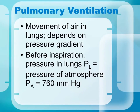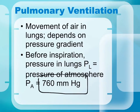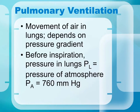Pulmonary ventilation is the movement of air in and out of the lungs, and what causes this movement is determined by pressure differences. The atmospheric pressure stays pretty much constant at 760 millimeters of mercury. The only pressure we can control is the pressure within the lungs. When lung pressure is lower than atmospheric pressure, air flows in; when it is higher than 760 millimeters of mercury, air flows out.